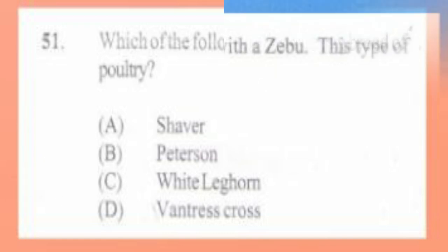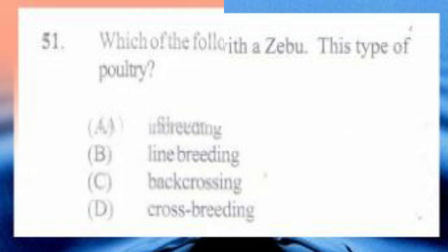Question number 52. A Jersey is bred with a Zebu. This type of breeding is: A. Inbreeding, B. Line breeding, C. Backcrossing, D. Crossbreeding. The answer is D, crossbreeding.